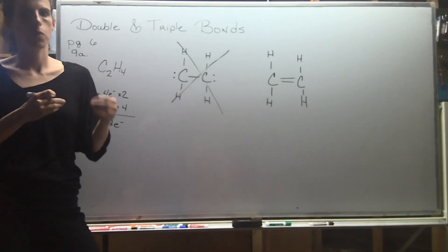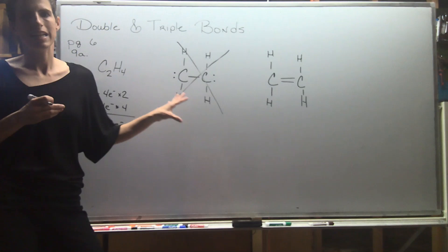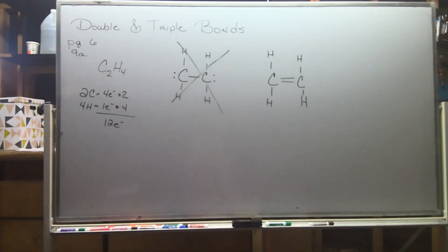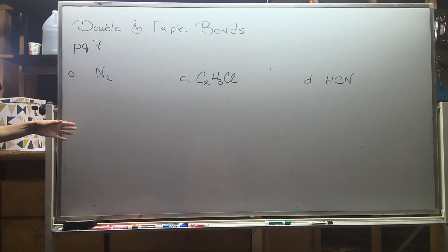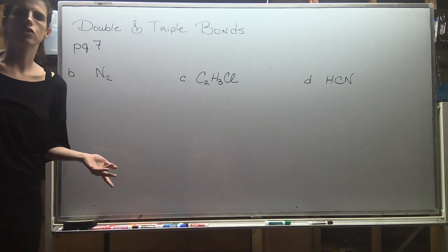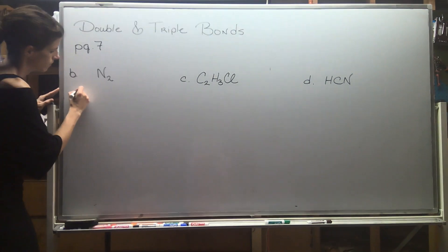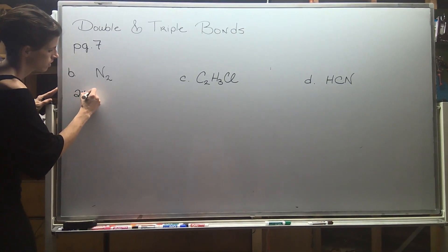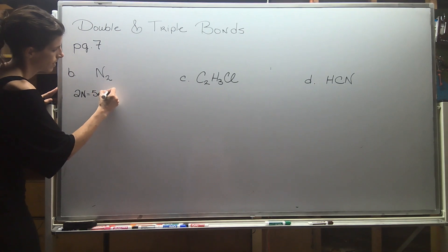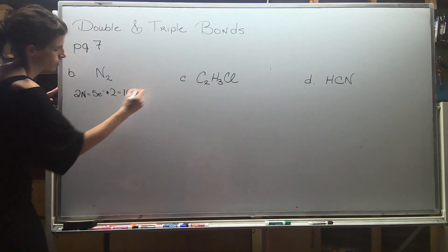The tip-off that we had to use a double bond was that we didn't have enough electrons available. Some more practice — let's draw a Lewis dot structure for nitrogen gas. Starting with the electron math: two nitrogens in group five, so five electrons times two gives us 10 electrons to build our structure.